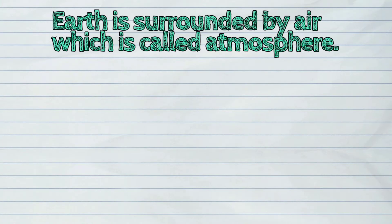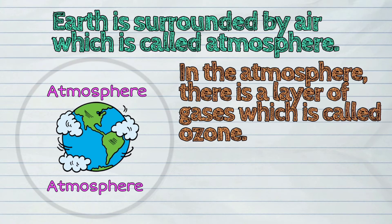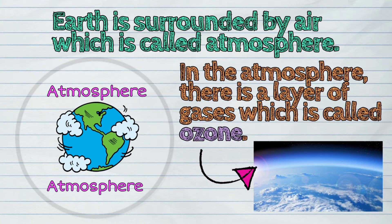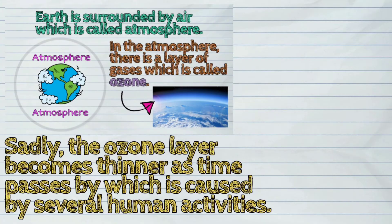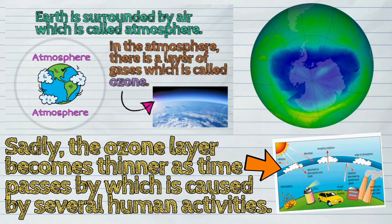Earth is surrounded by air, which is called atmosphere. In the atmosphere, there is a layer of gases which is called ozone. Sadly, the ozone layer becomes thinner as time passes by, which is caused by several human activities.